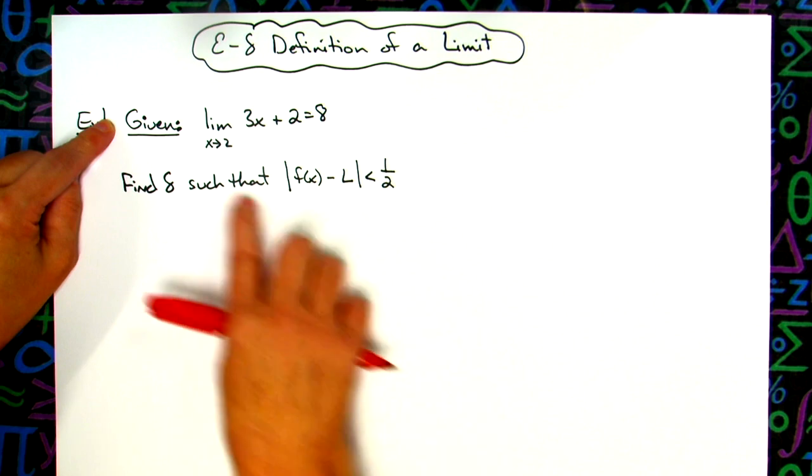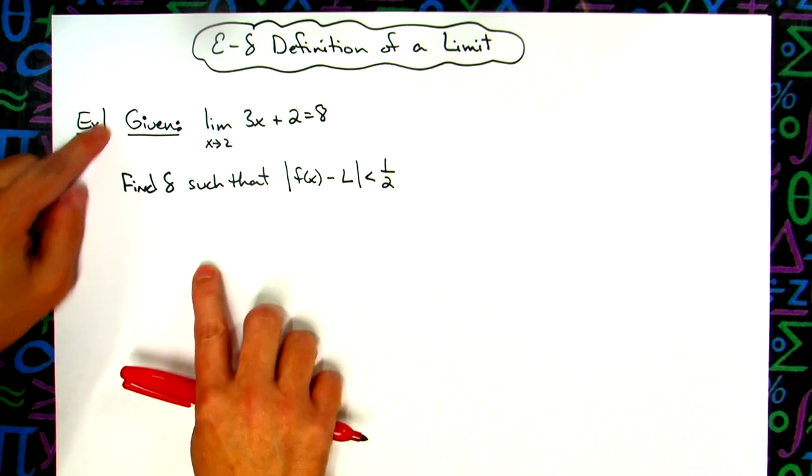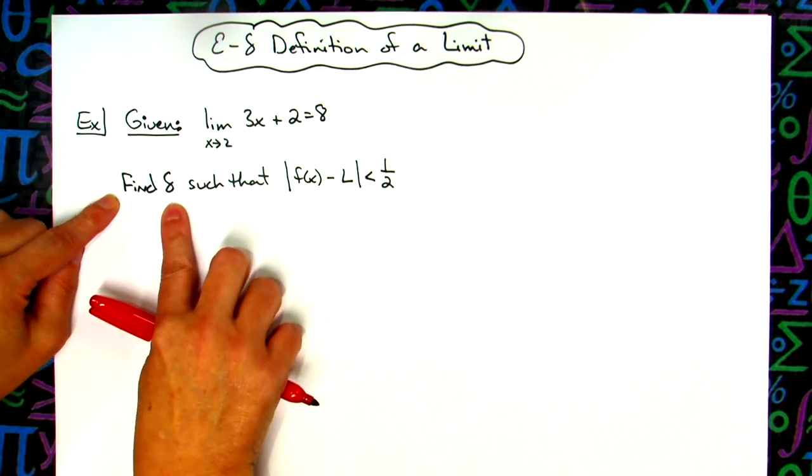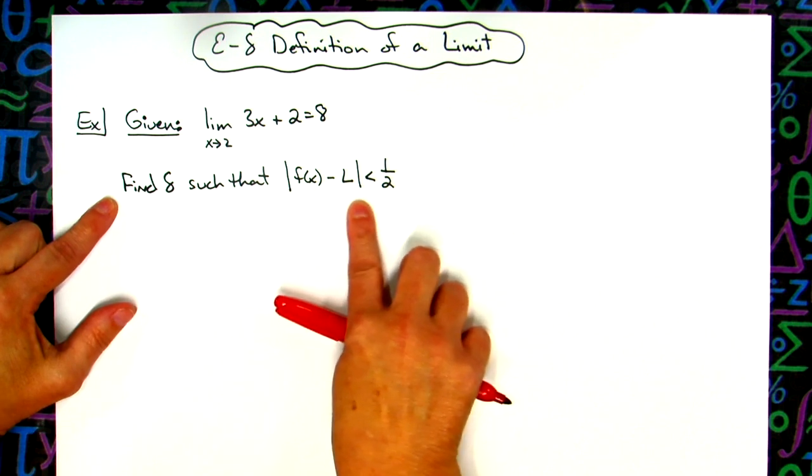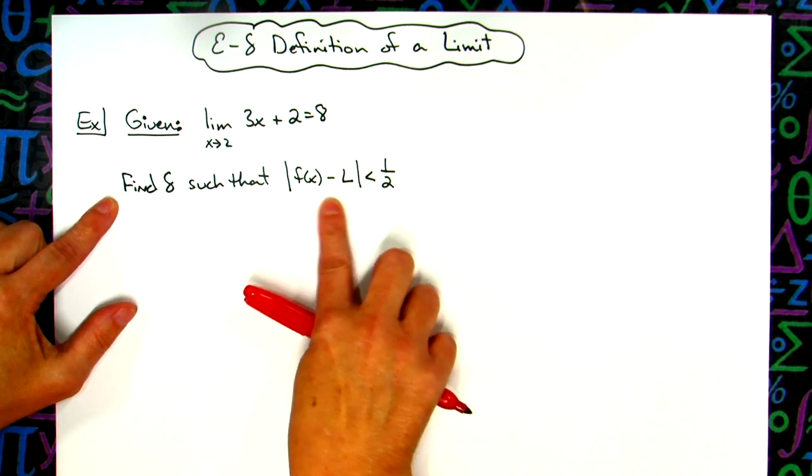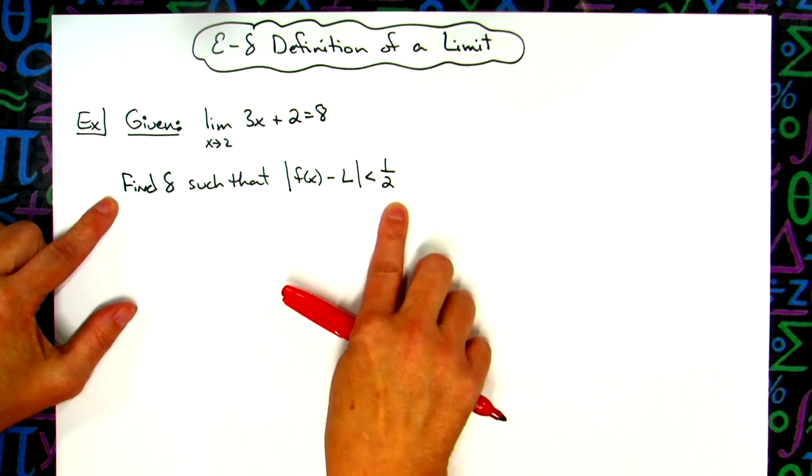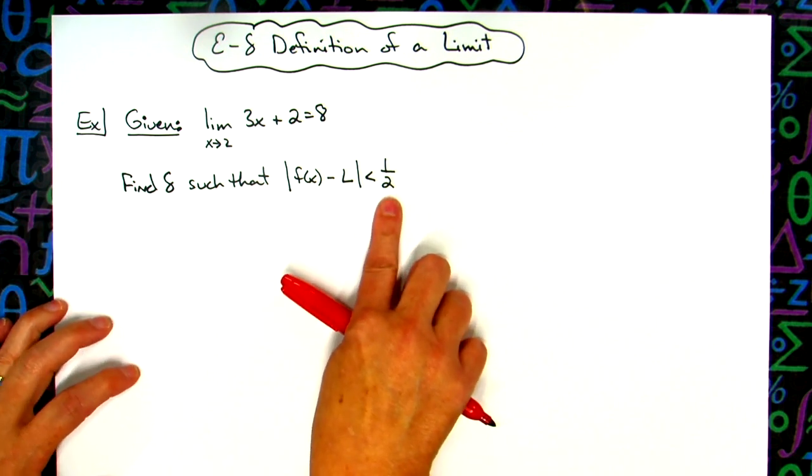Okay, so you're given a limit and what that limit equals. They're asking you to find delta such that the absolute value of the function minus the limit is less than one half. So then here is your epsilon value.